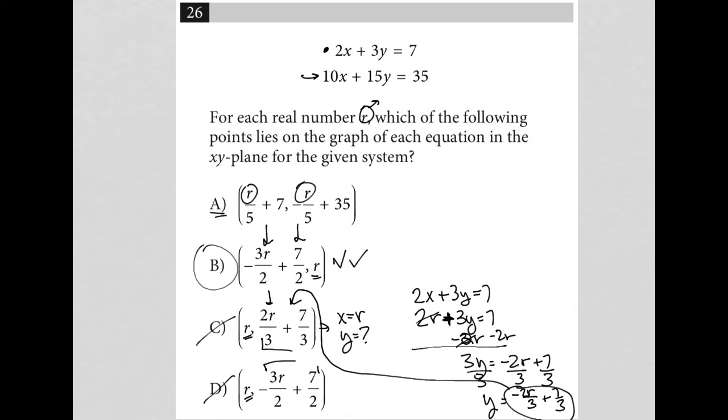But I like this method. I'm thinking of this as like the test is giving us a hint. Hey, choice B is saying, what happens when y equals r? Let's see what x is. And choice C and D are saying, hey, what happens when x equals r? Let's see what y is. And let's really turn this into a matching game instead of a typical traditional math question.